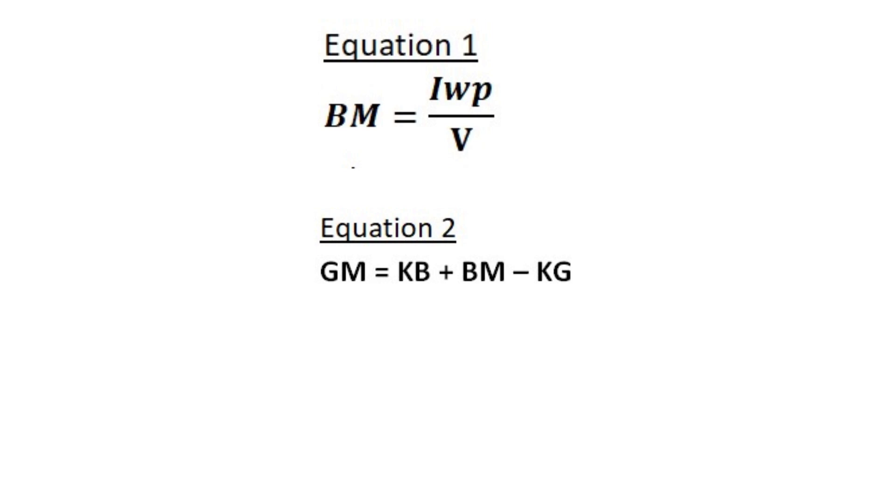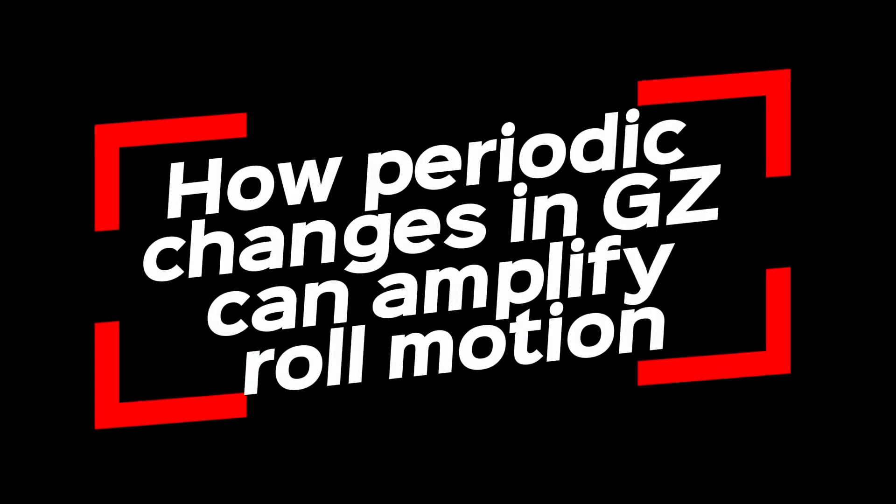Change in the moment of inertia directly impacts the metacentric radius, BM, according to equation 1. Consequently, changes in BM will alter GM, as described by equation 2, and GZ will be altered with changes in GM through the relationship in equation 3. Now that we understand how the water plane area influences GZ, let's examine how periodic changes in GZ can amplify roll motion.